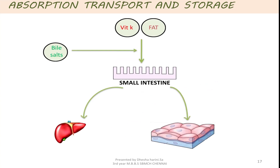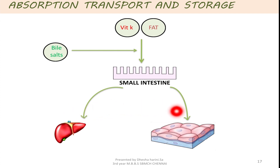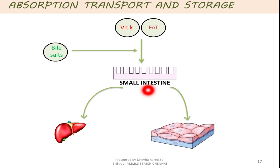Absorption, transport and storage: vitamin K absorption is similar to that of vitamin E absorption. Vitamin K and fat are together absorbed into the small intestine, for which bile salts are required. After they get absorbed, they enter into the circulation so that they can be stored in the liver as LDL and to a lesser extent in some other tissues. When vitamin K1 type of food is taken, the bacteria present in the large intestine converts it into a storage form which is vitamin K2, so that it can be stored in the liver and fatty tissues.